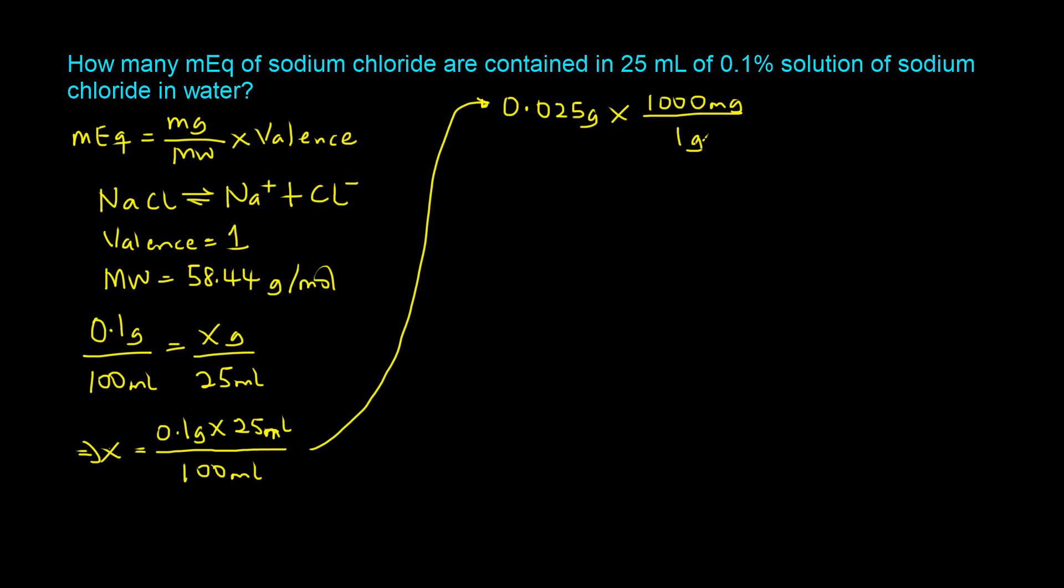So the grams cancel out and you end up with 25 milligrams. So we can now substitute the weight of substance in milligrams, the valence, and the molecular weight into the equation.